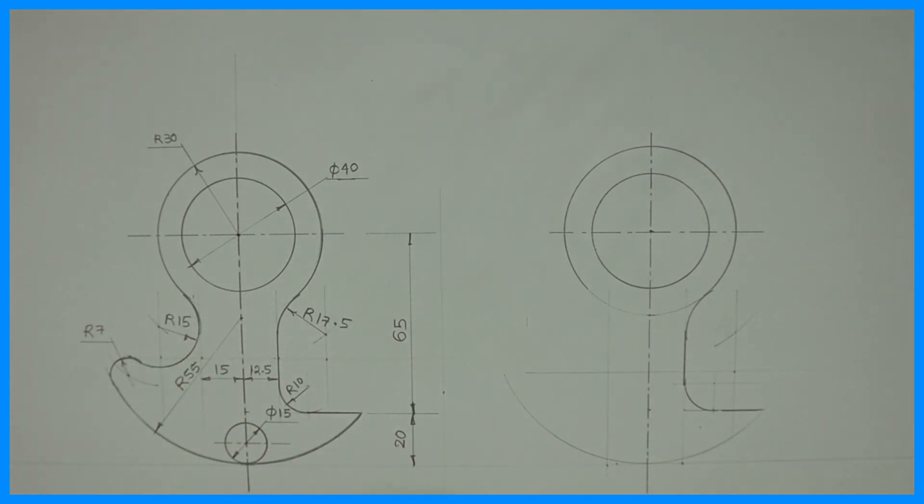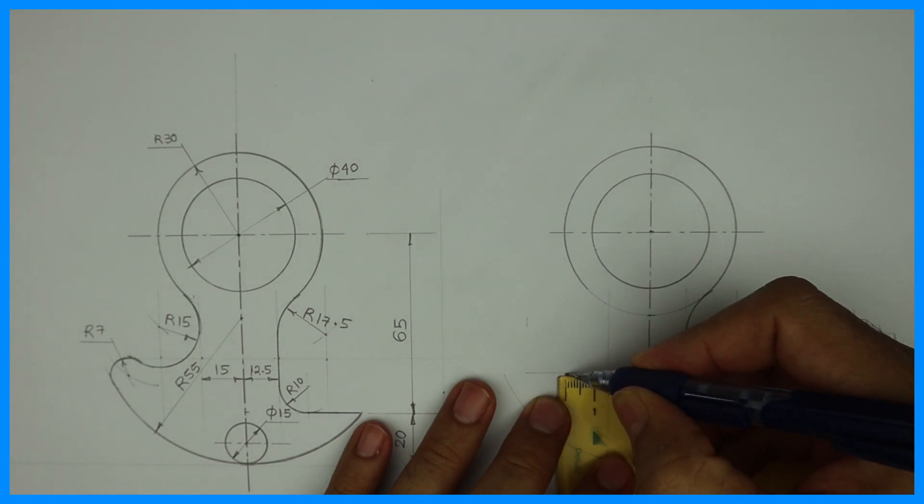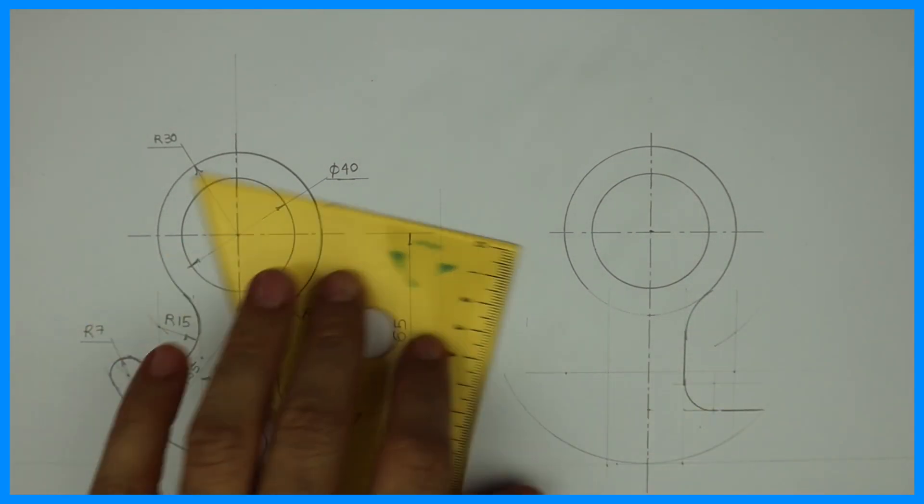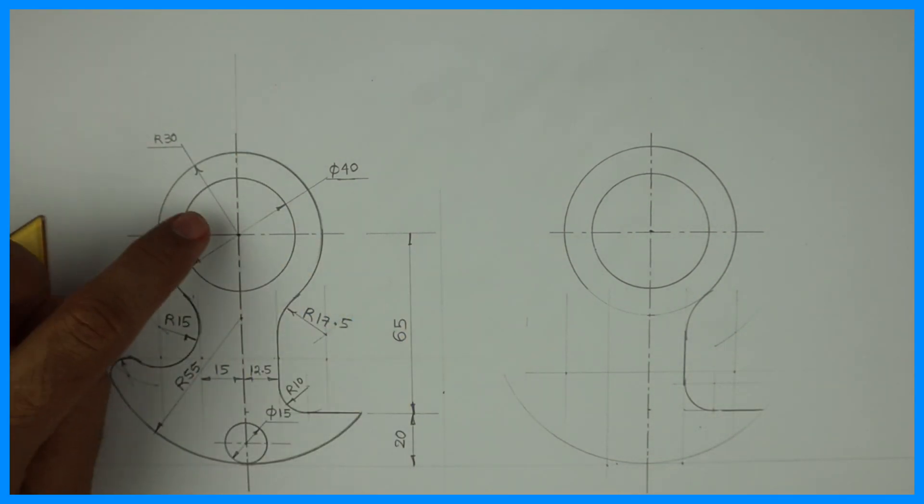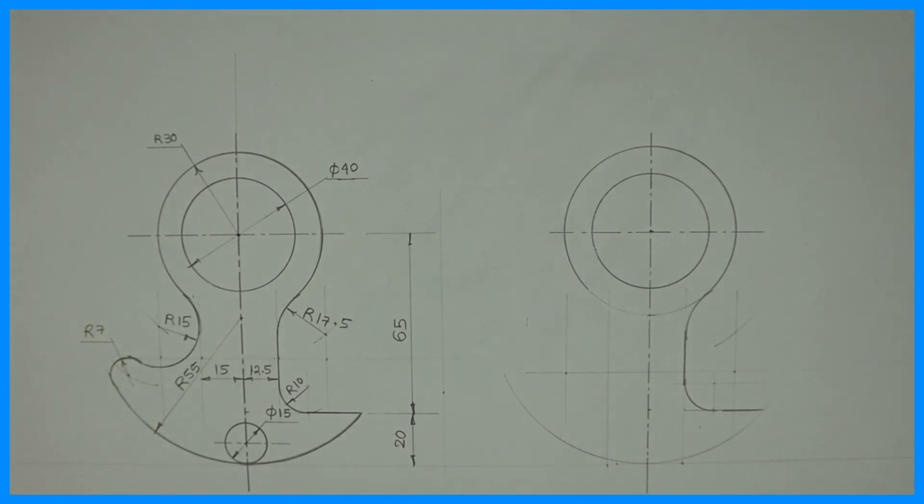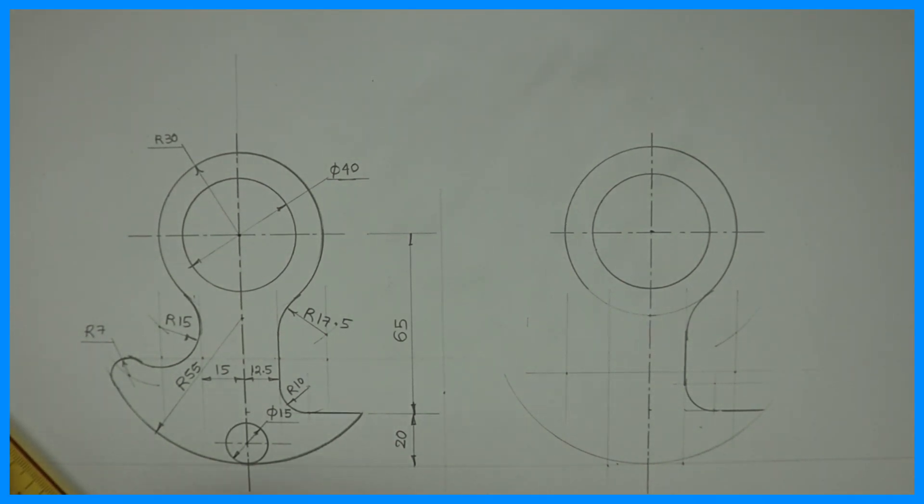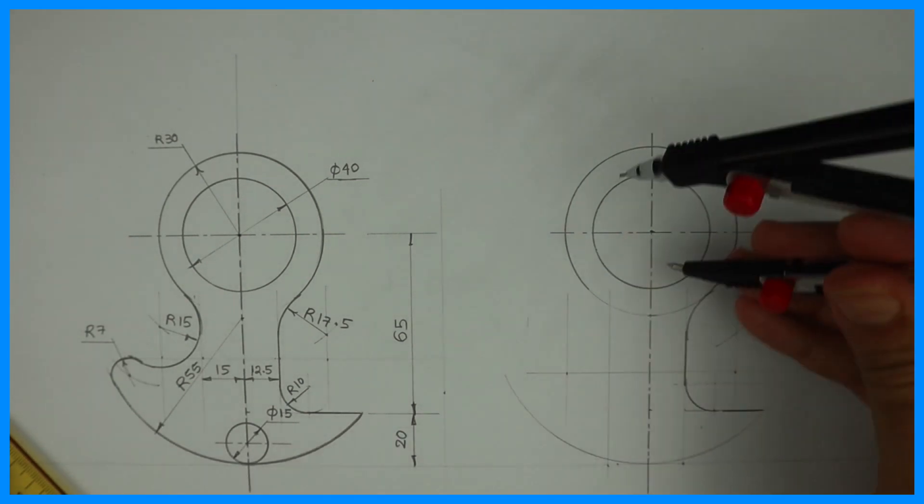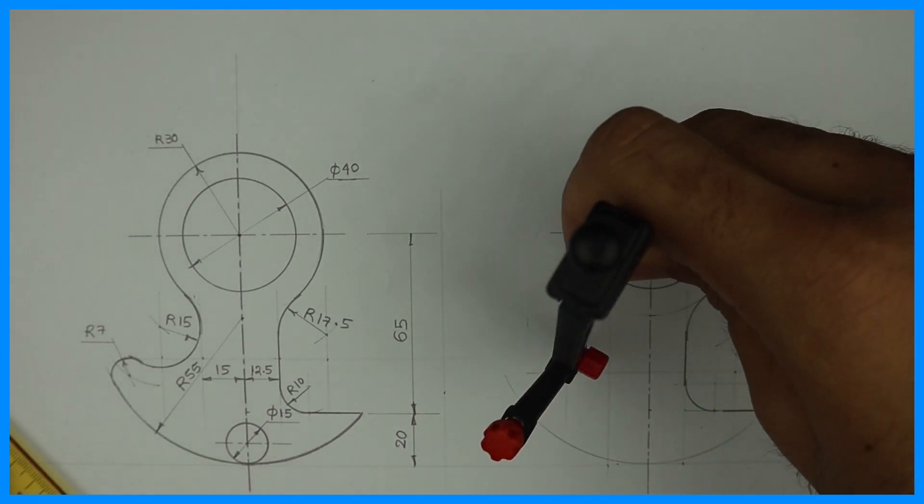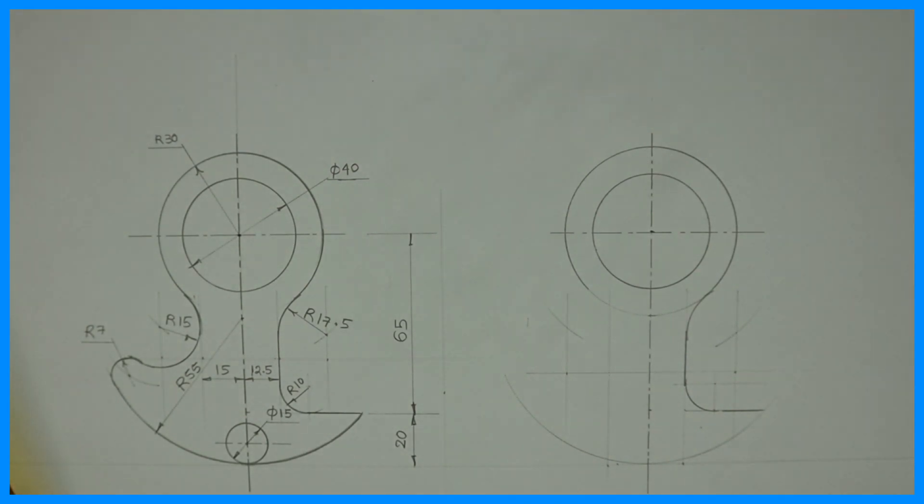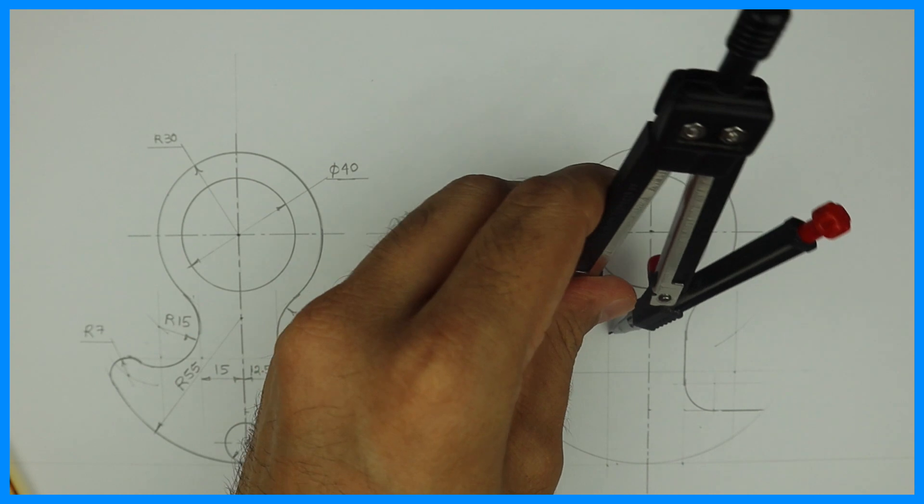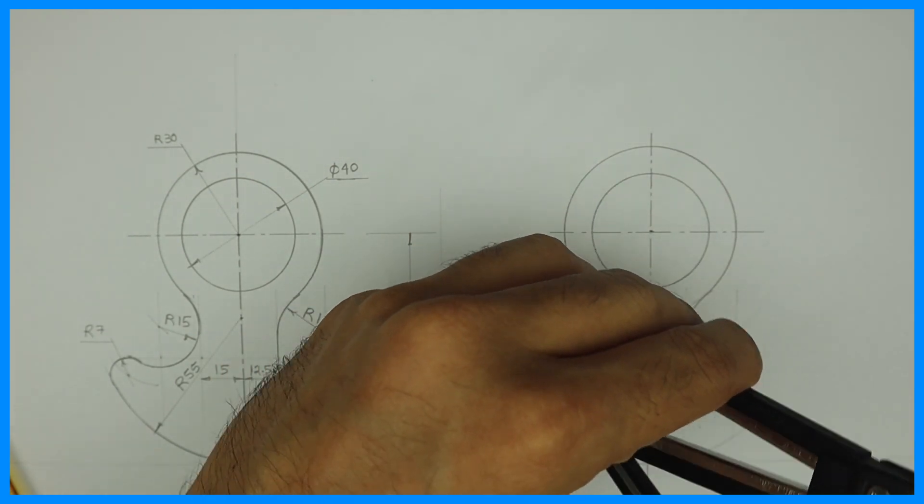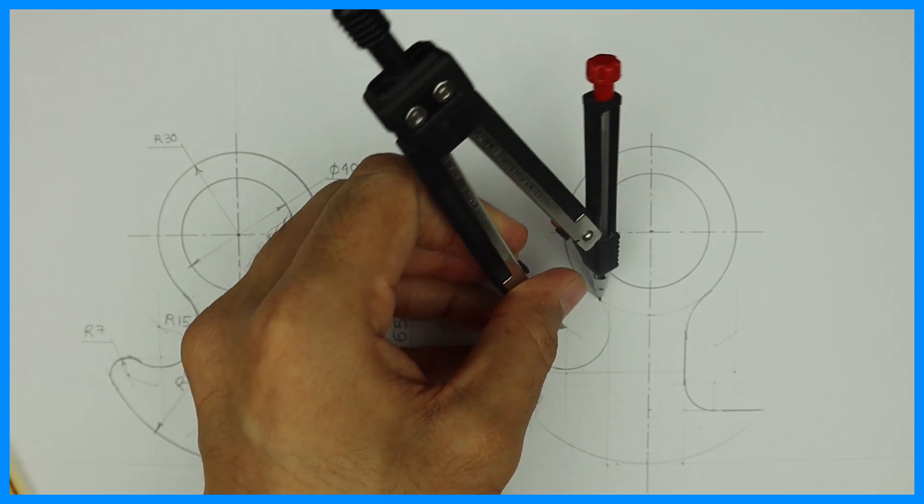Now here we have to take 15. So again we will take 15 parallel line from 15. And that radius 15 is merging with radius 30. So 30 plus 15 equals 45. So we will take 45 and from here we will cut 45. Wherever it will cut, from that point we can draw radius 15. See this. So we are done with radius 15.